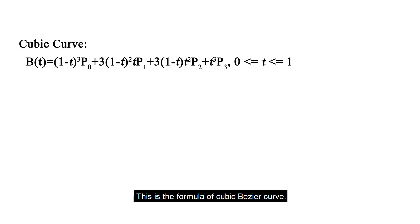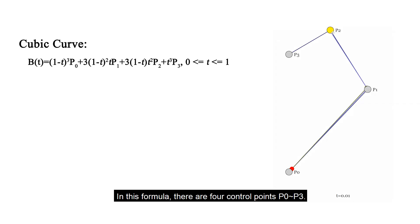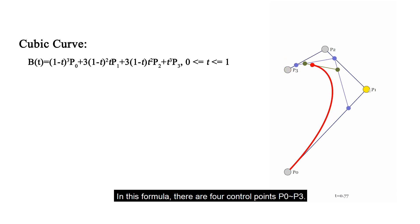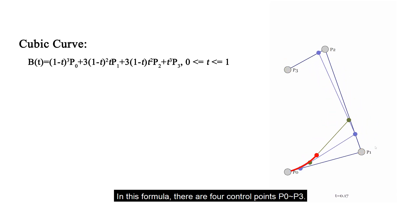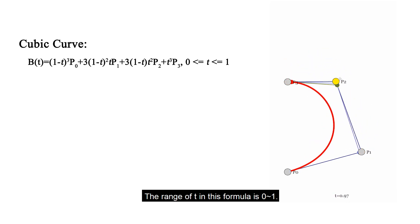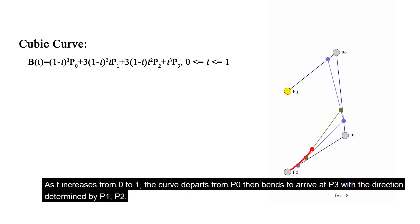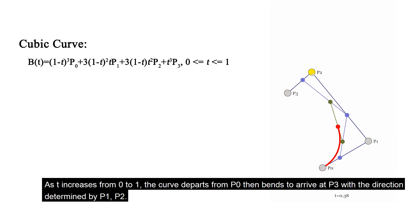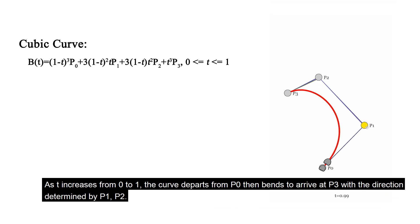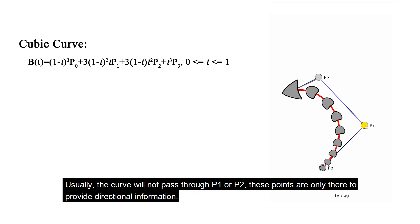This is the formula of the cubic Bezier curve. In this formula, there are four control points P0 to P3. The range of t in this formula is 0 to 1. As t increases from 0 to 1, the curve departs from P0, then travels to arrive at P3 with the direction determined by P1 and P2. Usually the curve will not pass through P1 or P2. These points are only there to provide directional information.